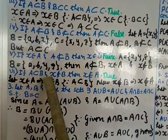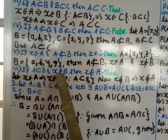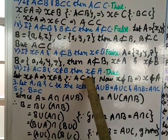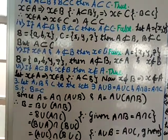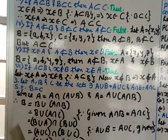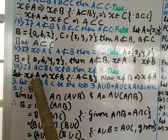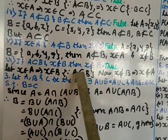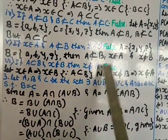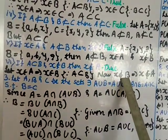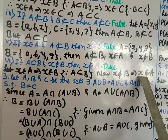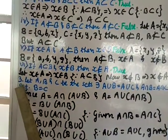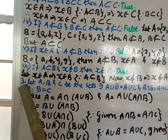Statement 6: if A ⊆ B and x ∉ B then x ∉ A. This is true. Proof: suppose x ∈ A. Since A ⊆ B, x ∈ B — but this contradicts x ∉ B. So x ∉ A.